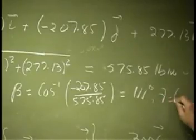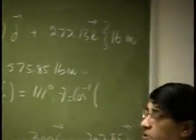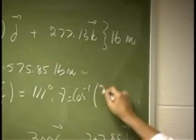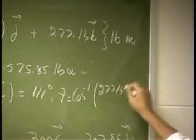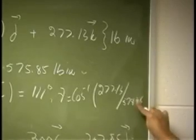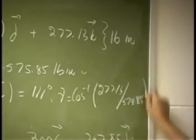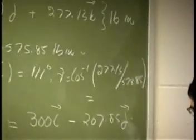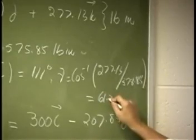Then you have gamma, that's another cosine inverse. This time you're going to have 277.13, divide 575.85. And this comes out to be 61.2 degrees.